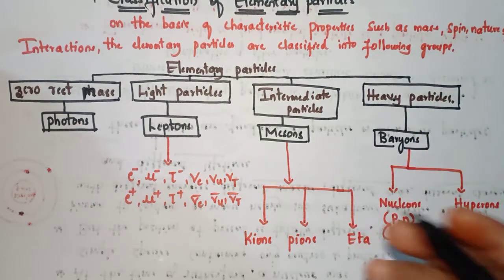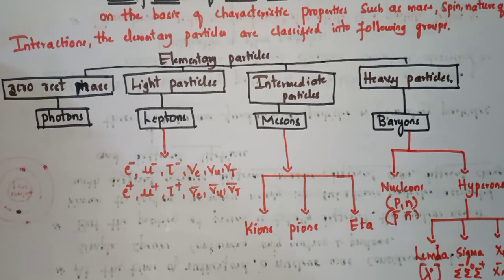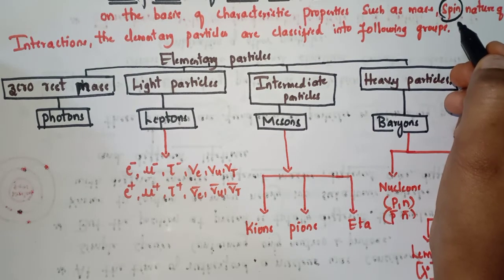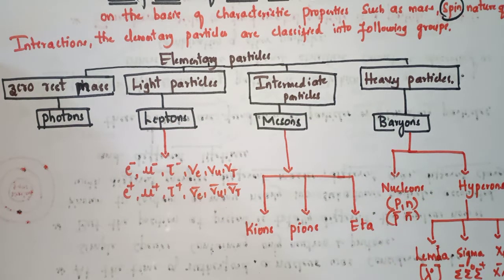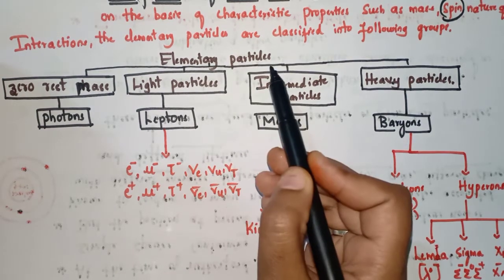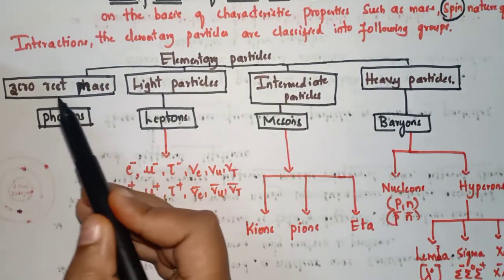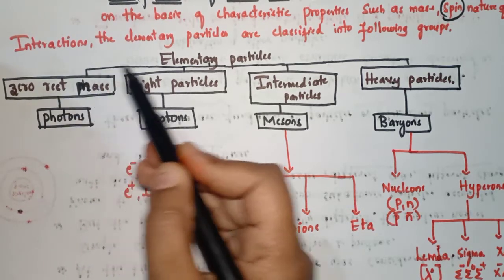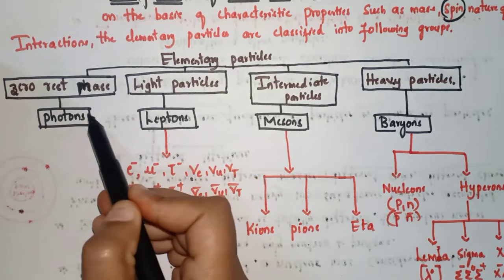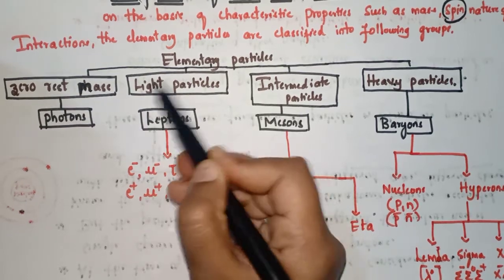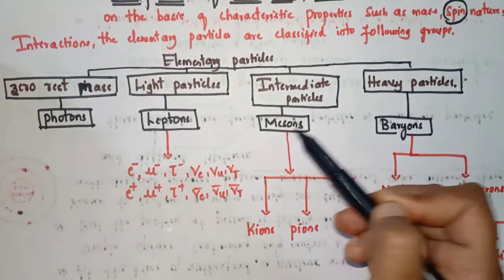An elementary particle always has the same rest mass. On the basis of spin, particles of integral spins are different and particles having zero or integral spins are different. The nature of interactions may be gravitational, weak, electromagnetic, or strong interactions. Based on all these things, elementary particles are classified into four types: zero rest mass particles, light particles, intermediate particles, and heavy particles.